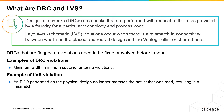DRC are design rule checks that are flagged as violations and need to be fixed or waived before tape-out. LVS is layout versus schematic, and these errors occur where there is a mismatch in connectivity — an open or a short, for example — between what is placed and routed and what's in the Verilog netlist.